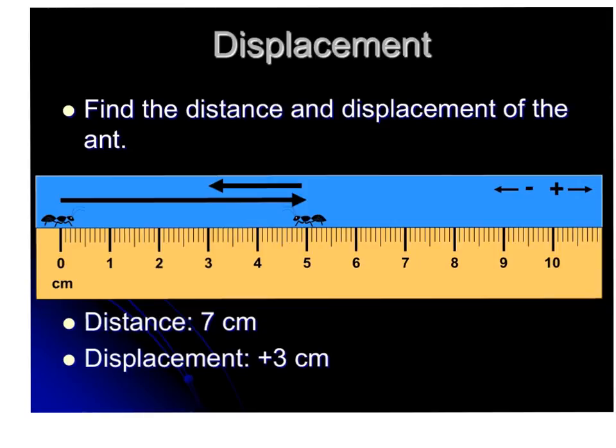Now look at this example. The ant walks from 0 to 5, and then decides to turn around and backtrack to the 3 by going 2 more cm. So distance, we just add those up, because that's how far it walked. 5 plus 2 equals 7. But for displacement, we have to look at its original position and its final position, and those are the only two values we're looking at. Its final position is at 3 cm, and its original position was at 0. So we say 3 minus 0 is giving me a positive 3 cm because the 3 is to the right of the 0.